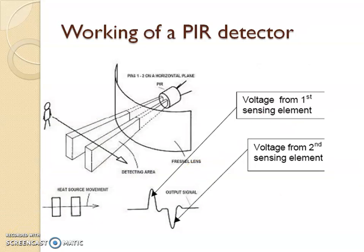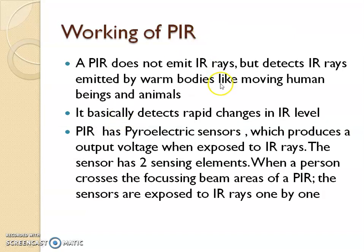The same PIR detector can also be installed horizontally. The device installed in a horizontal fashion will detect an intruder when he passes through the space. One important thing in PIR to note: it does not emit any infrared rays but only detects infrared rays. This is because infrared rays are detected from the warm bodies of human beings or animals moving through that area, as all living bodies generate infrared rays which are sensed by the PIR.